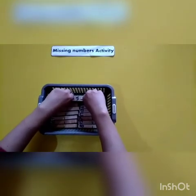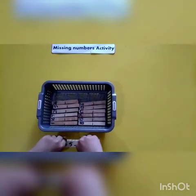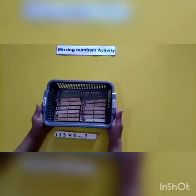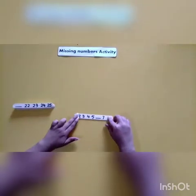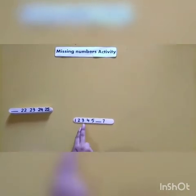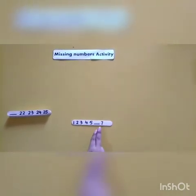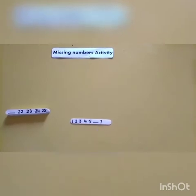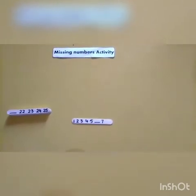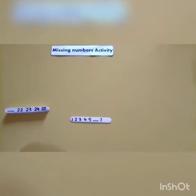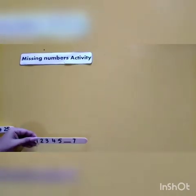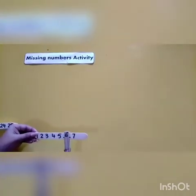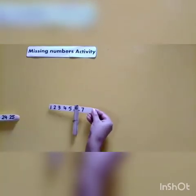First I will take it out. Now let's count with me: one, two, three, four, five. One number is missing — do you know which number it is? This number is six! Very good. Now I'm going to paste the number six with the help of a peg. Yes, we have done it!